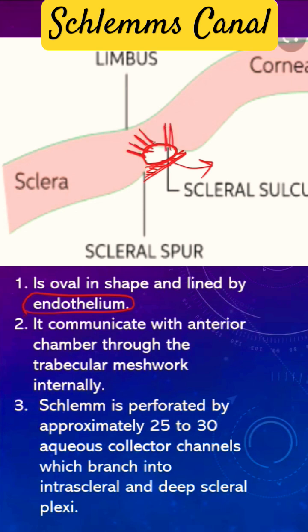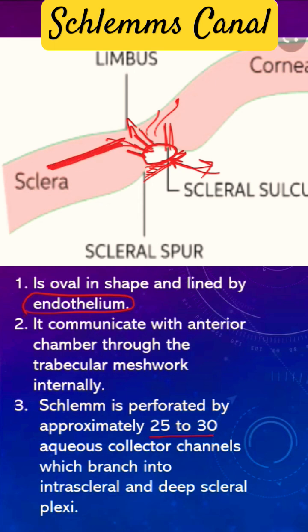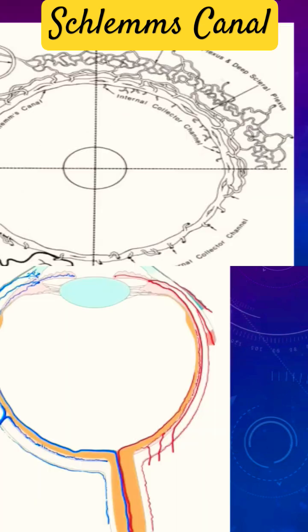There are other channels or routes through which the aqueous will flow from Schlemm's canal outside into the sclera and episcleral veins. Those channels are called collector channels, and they branch to form certain plexuses within the sclera. If they are forming a plexus within the substance of the sclera, it is called the intrascleral plexus, and sometimes deep to the sclera, which is called the deep scleral plexus.